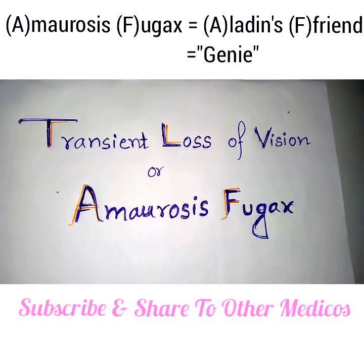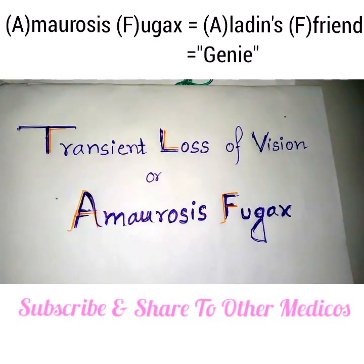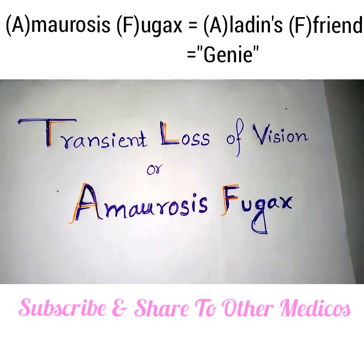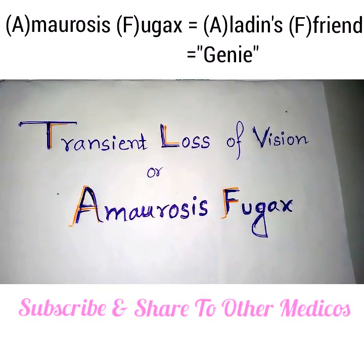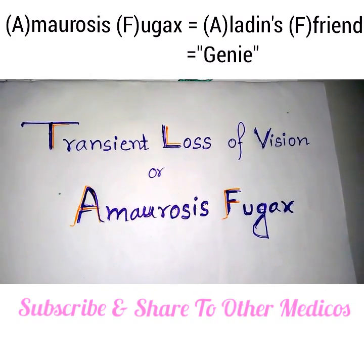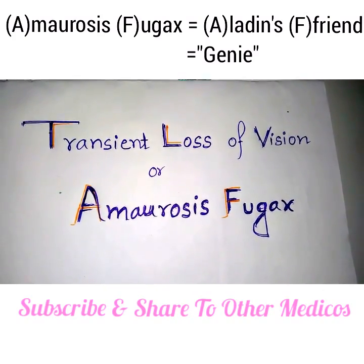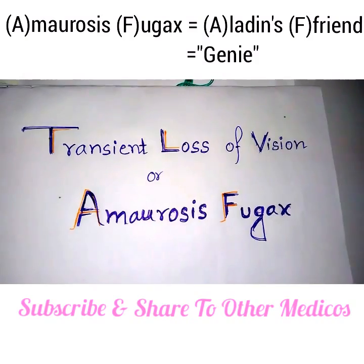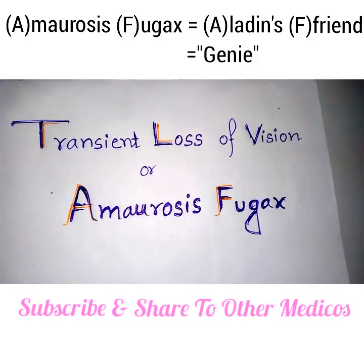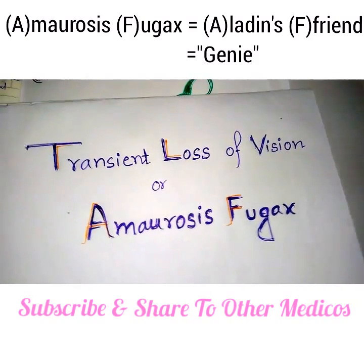Welcome back friends. Today's topic for mnemonic is Transient Loss of Vision or Amaurosis Fugax. One question has come from this topic in the exam, so it is a very important topic and here comes the mnemonic.